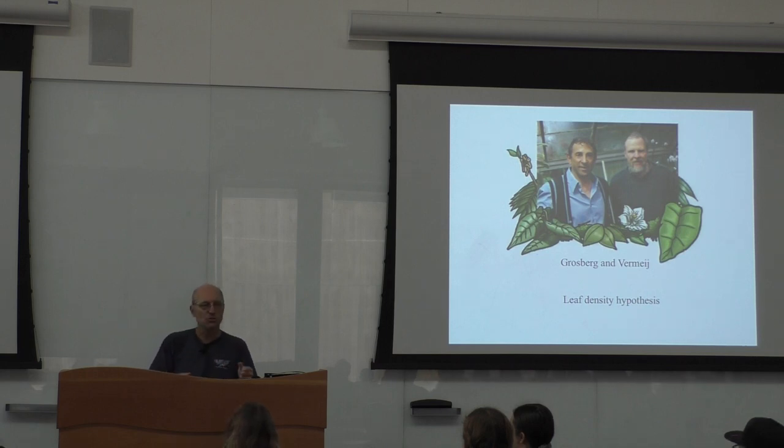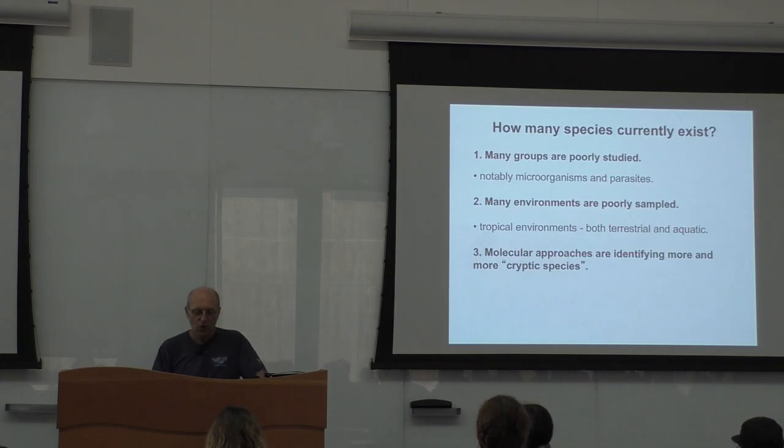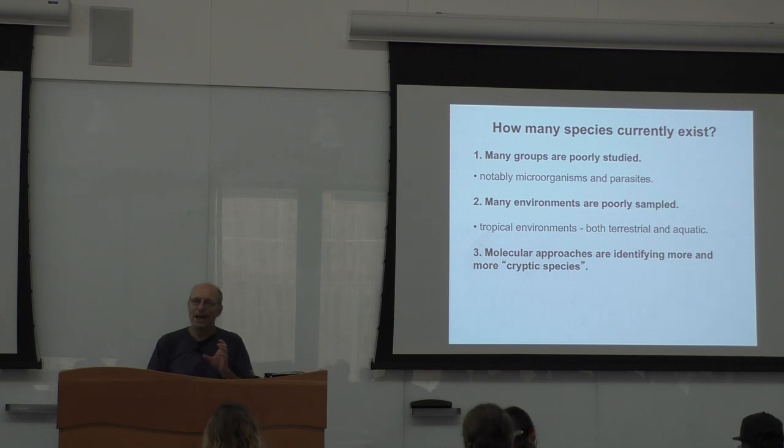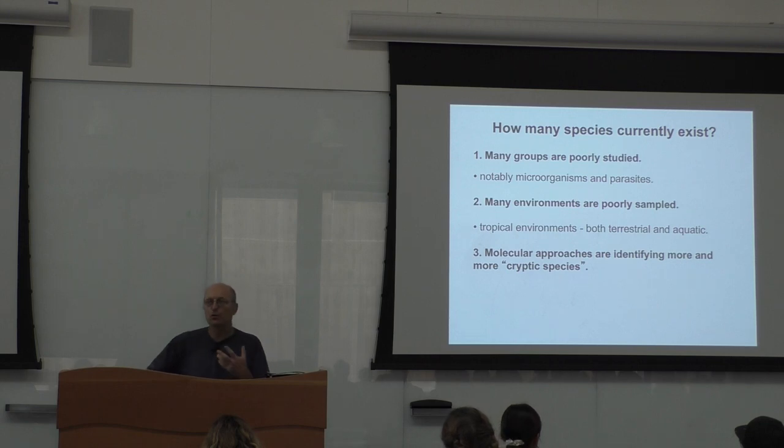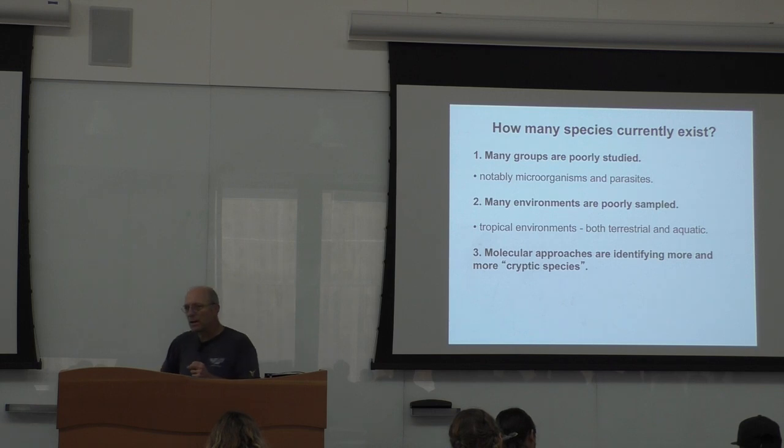And the guy said, oh, actually we were just testing you to see if you could do that. And he did it faster than any of the other grad students that they took in. So he has a lot of anecdotes like this that are really cool. You should really read his book, really cool. Very good. Okay, so the reason why we have a poor understanding of species diversity is for two main reasons. Groups are understudied and environments are poorly sampled. There is another thing that we don't have a very good grasp of and it's the fact that there are cryptic species.